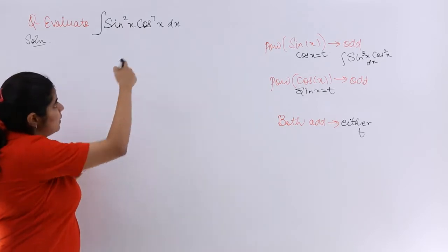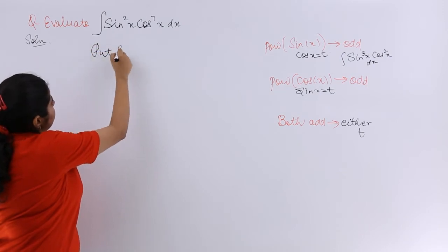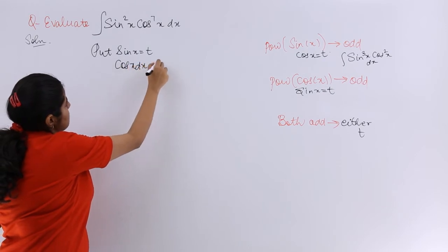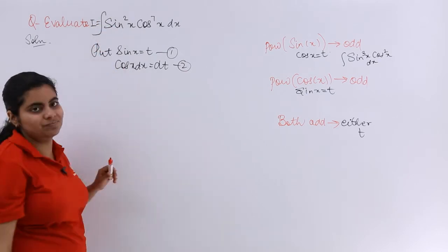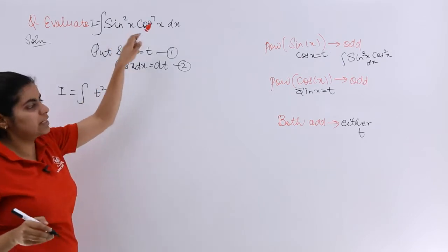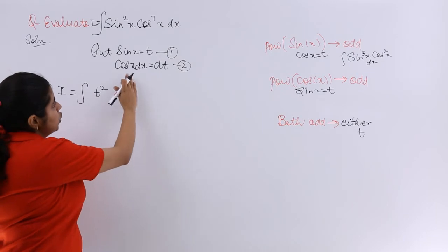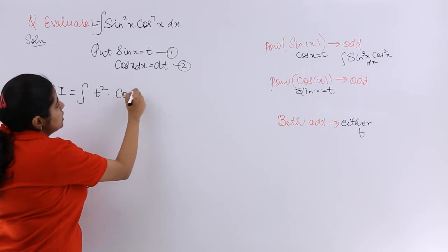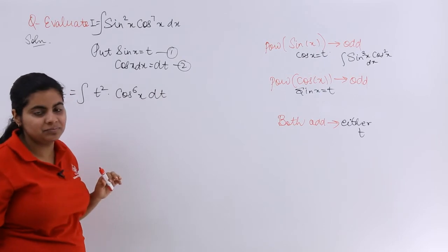We have sin²x · cos⁷x — cos odd, so put sin x equal to t. Differentiating gives cos x dx equal to dt. Now I becomes t² times (cos x)⁷. We write cos x dx as dt, so we separate out cos⁶x, leaving t² · cos⁶x · dt.